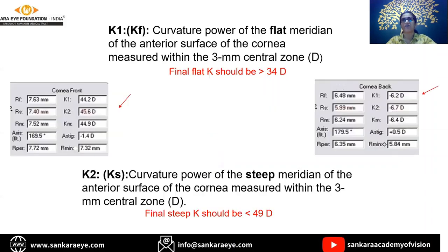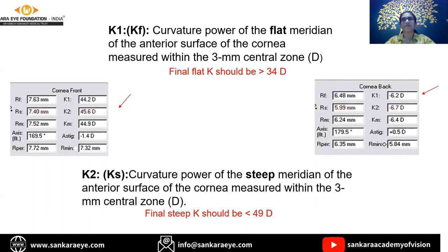Once quality and asphericity are assessed, we look at K values. K flat, also called K1, and K steep, called K2, represent the curvature power of the flat and steep meridians of the central 3 mm zone of the cornea. These are essential when planning refractive surgery. The rule is: post-refractive surgery, whether myopic or hypermetropic ablation, the corneal K should not become flatter than 34 or steeper than 49. Either extreme leads to an unusual cornea with high optical aberrations and poor quality of vision. The axis shown represents topographic astigmatism, always to be compared with manifest astigmatism from refraction.